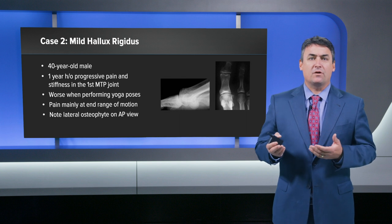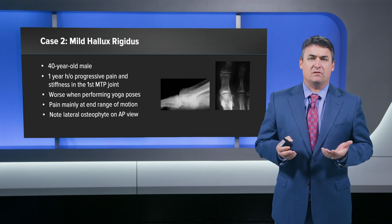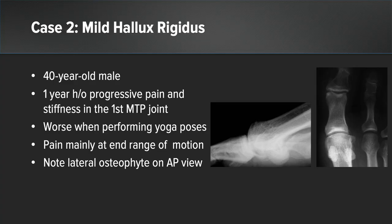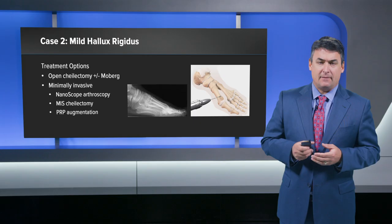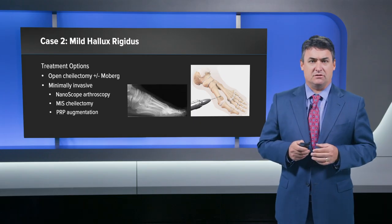Case two is a 40-year-old male with a one-year history of progressive pain and stiffness in the first MTP joint, worse with certain yoga poses and mainly at end ranges of motion. X-rays show a little lateral osteophyte on the AP view and a small dorsal osteophyte on the lateral view. The best option might be an open chylectomy with a Moberg, or if it's purely the bone spur, a nanoscope or MIS chylectomy. PRP can always augment healing for this more mild hallux rigidus.